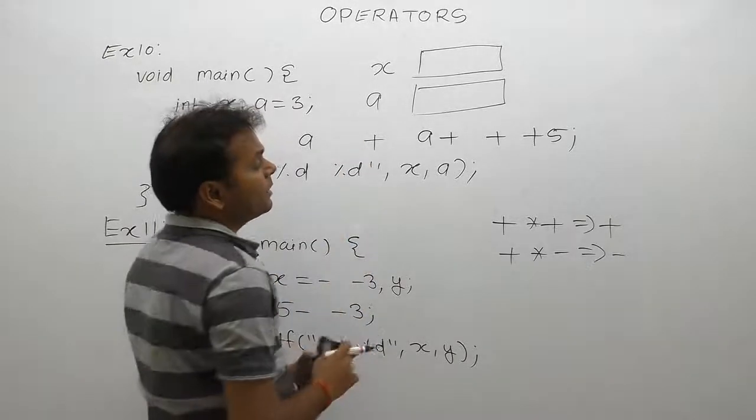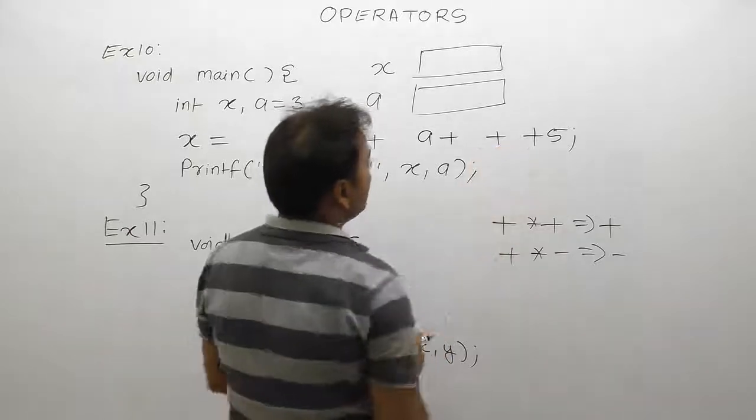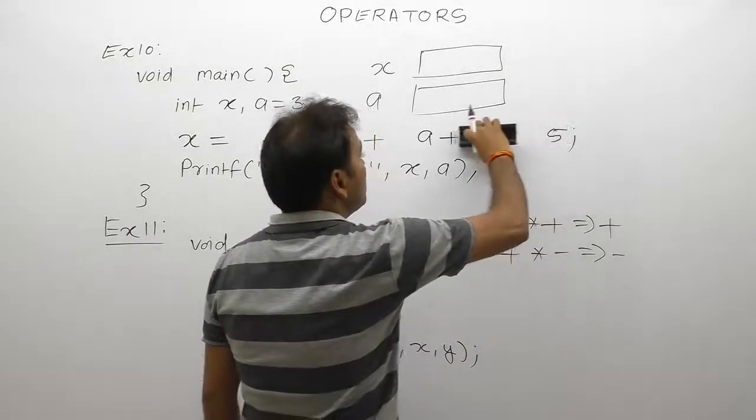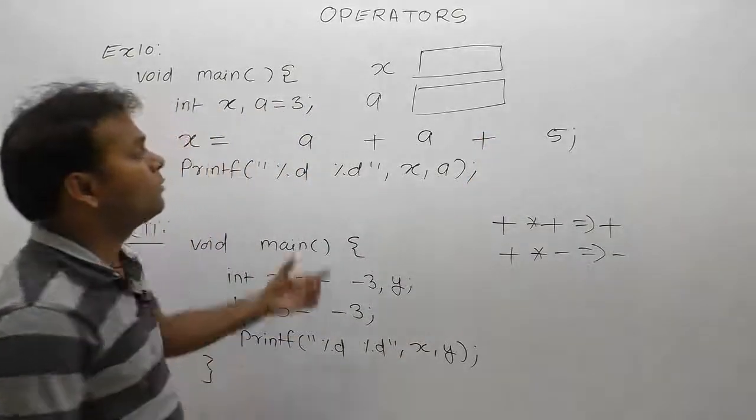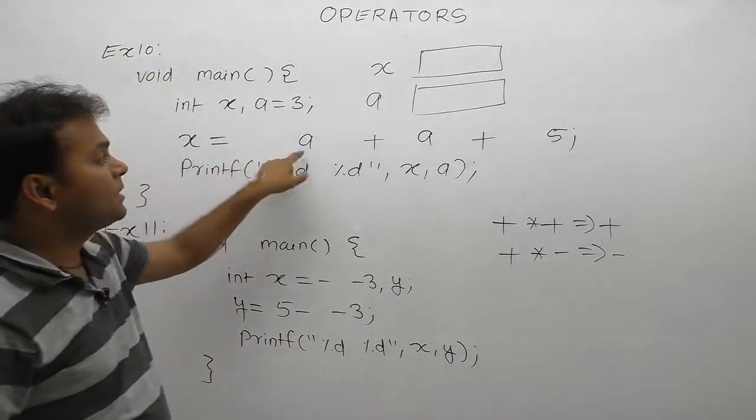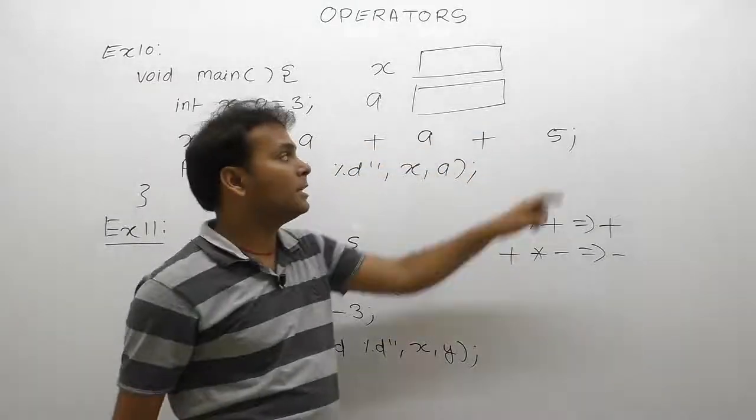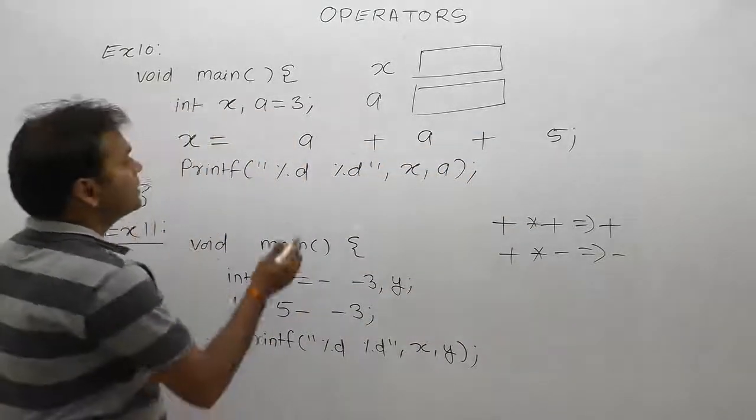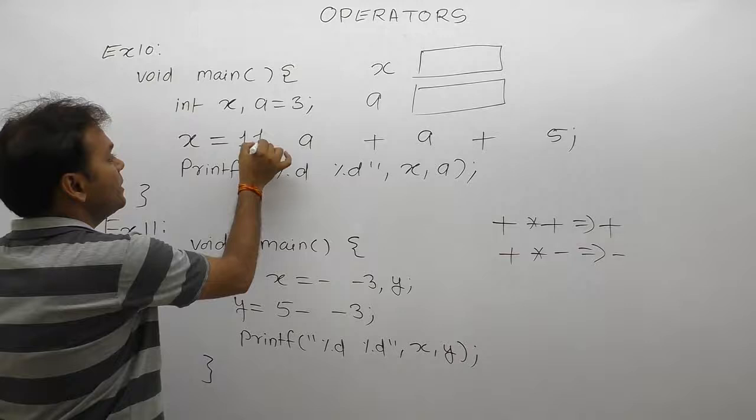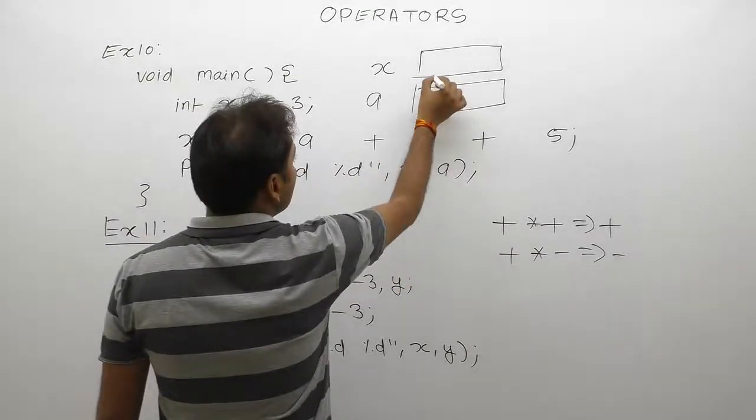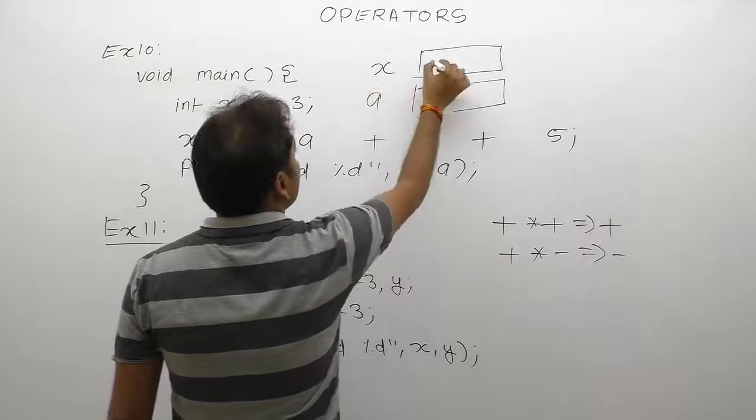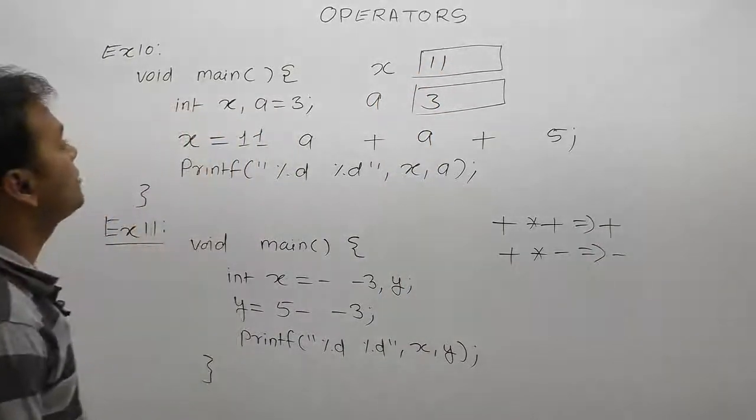The result of this expression is 11, which is assigned to the variable x. Then the value - 3 plus 3 plus 5 equals 11. The overall result of this expression is 11, which is assigned to the variable x. Now x becomes 11, and a's value is already 3.